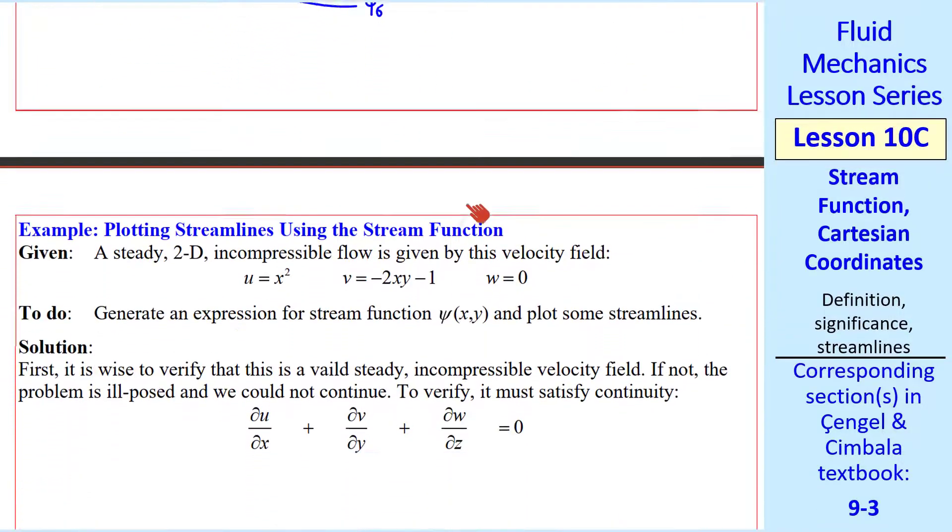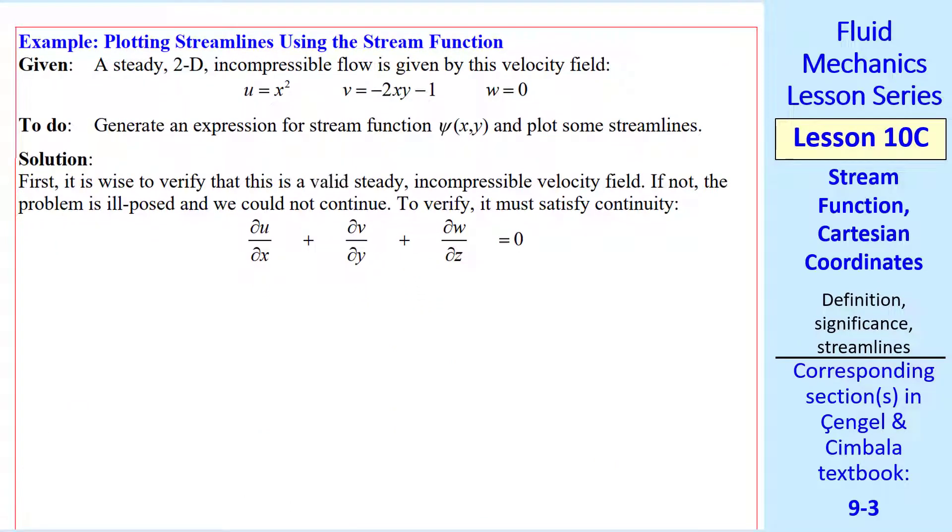Again, we'll illustrate with an example. We have a steady 2D incompressible flow with this velocity field. Let's generate an expression for stream function and then plot some streamlines. And then I'll look at volume flow rates as well. It's always wise to first validate that this is a steady incompressible velocity field. If not, you won't be able to define a stream function that is valid.